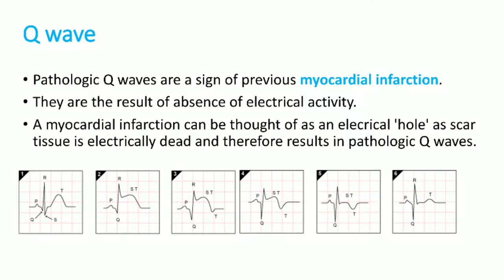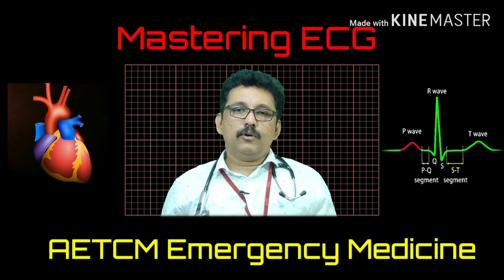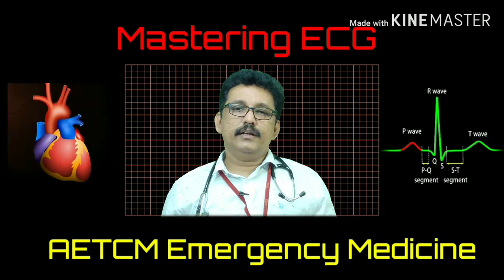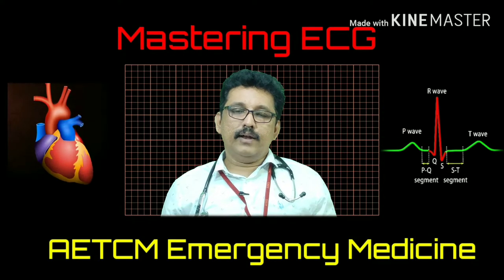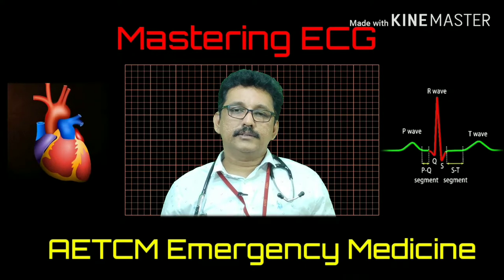To identify a pathological Q wave: the Q wave should be more than 25% of the amplitude of the following QRS complex, or the Q wave duration should be more than 40 milliseconds (one small box). Additionally, the same change must be present in two contiguous leads — such as V1-V2, V2-V3, V3-V4, V5-V6, or II and III, or III and aVF. The simplest criterion: Q wave more than 25% of the following QRS complex.